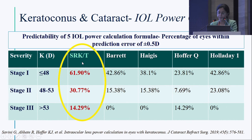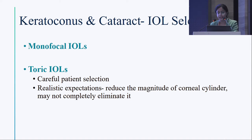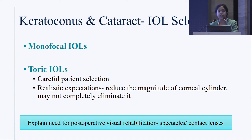Which IOL to choose? Go ahead with monofocal intraocular lenses for the majority of cases. Toric IOLs need careful patient selection with realistic expectations — you are going to reduce the magnitude of corneal cylinder but may not completely eliminate it. Document stability of K in successive readings; both axis and magnitude must be stable. Explain the need for postoperative visual rehabilitation; spectacles and contact lenses will still be required.